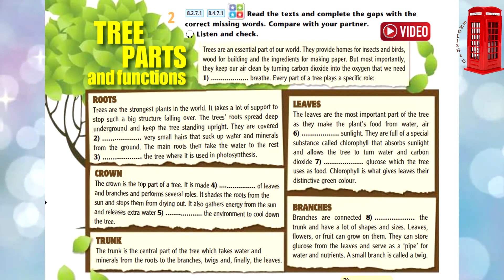Branches are connected to the trunk and have a lot of shapes and sizes. Leaves, flowers, or fruit can grow on them. They can store glucose from the leaves and serve as a pipe for water and nutrients. A small branch is called a twig.